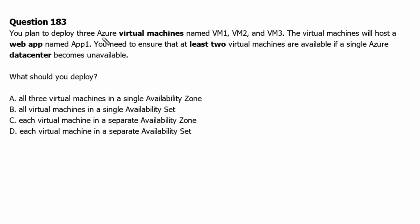You plan to deploy three Azure virtual machines named VM1, VM2, and VM3. The virtual machines will host a web app named App1. You need to ensure that at least two virtual machines are available if a single Azure data center becomes unavailable. What should you deploy?